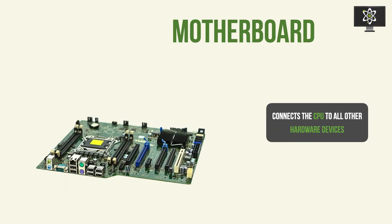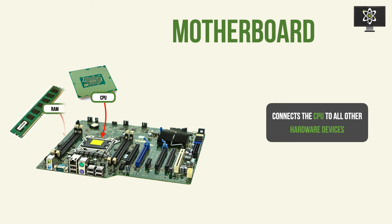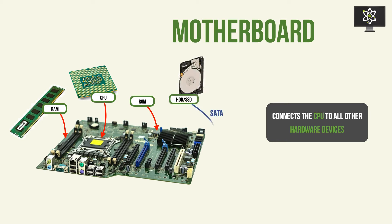The motherboard, by definition, connects the CPU to all other hardware devices. Your CPU typically sits in a CPU slot here — different ways of installation for AMD and Intel CPUs. Then you've got a connection for the RAM, so the RAM stick gets inserted into a certain slot in your motherboard. You've also got other components on the motherboard such as the ROM, which typically comes manufactured with the motherboard. And then you've also got places where other devices such as your hard disk can be connected to the motherboard, via SATA cables, typically.